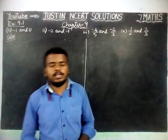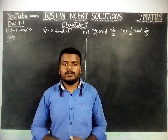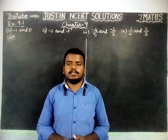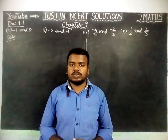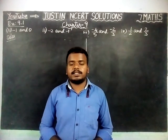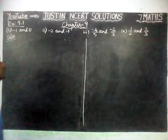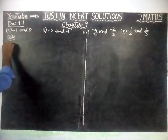Hi friends, welcome to Justine's NCRT Solutions. In this video, we are going to see Class 7 Maths, Chapter 9, Exercise 9.1, first question: list 5 rational numbers between the given numbers. We are going to find them one by one.